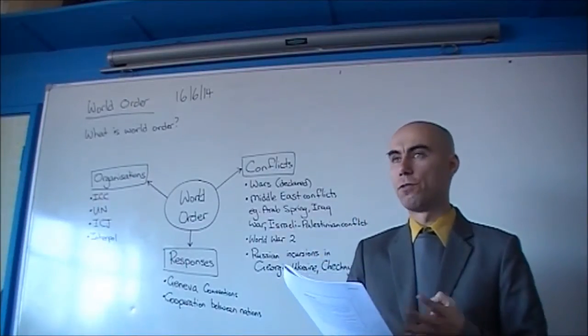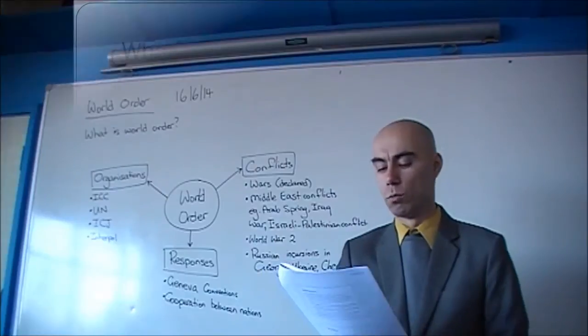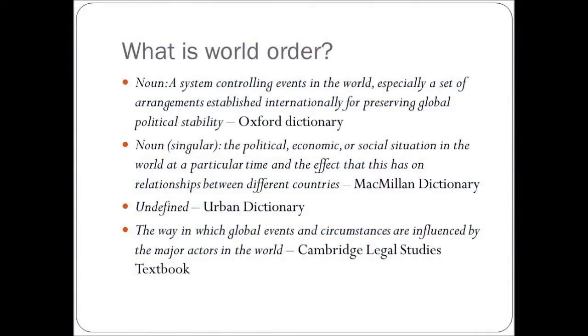To give you an idea, I've gone to a few different sources to try and find what world order means. So the Oxford Dictionary defines world order as a noun. It's a system of controlling events in the world, especially a set of arrangements established internationally for preserving global stability.